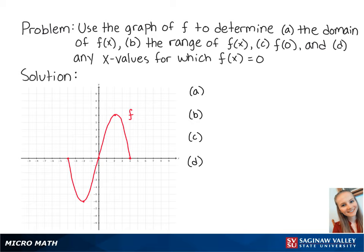For letter a, the domain of f of x is the set of all x values within the function. Looking at the graph, we can see that the smallest value of x is negative 4 and the highest value of x is positive 4. Since the domain is inclusive on both endpoints, we can write this as [-4, 4] with brackets on both endpoints.